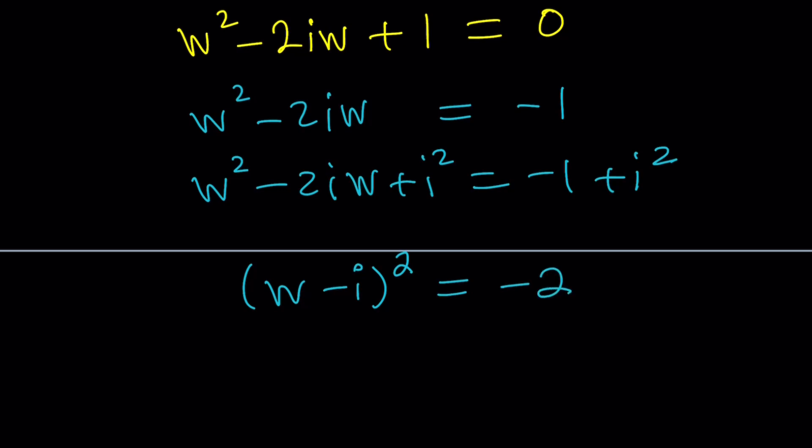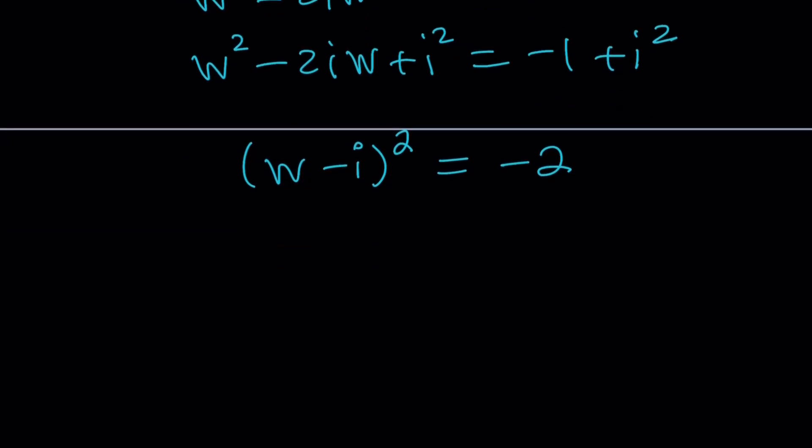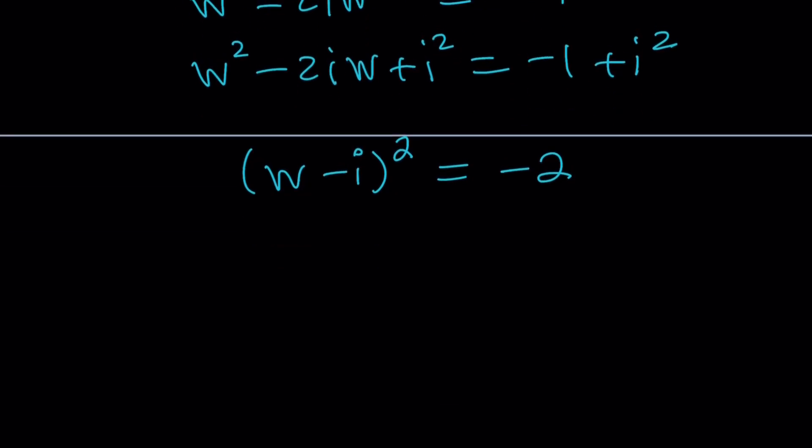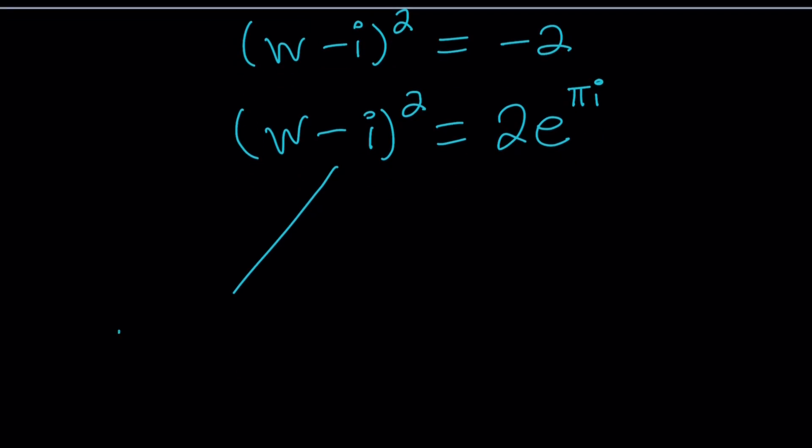Now we're going to take square roots and find w from here. Remember, though, with complex numbers, there are two square roots. And negative 2 can basically be written as 2 times e to the power pi i. And when you find the first square root, it's going to be half of pi. So we can write this as w minus i equals the square root of 2 times e to the power pi i over 2.